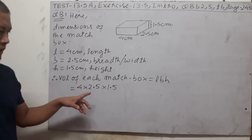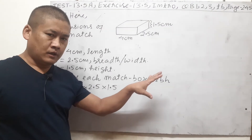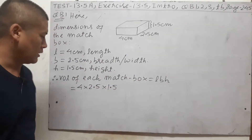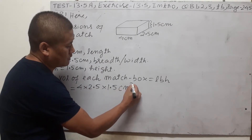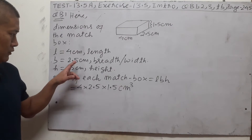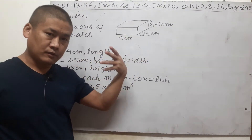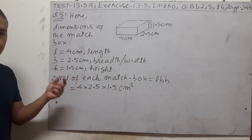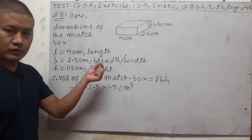Area is two-dimensional, so area comes out in centimeter square. But volume is three-dimensional, so volume is always expressed in centimeter cube — or cubic centimeter. If the measurements are in meters, then volume will be in meter cube.